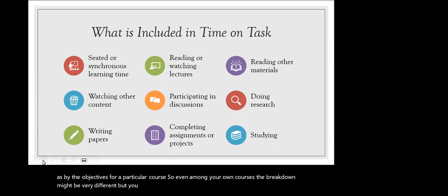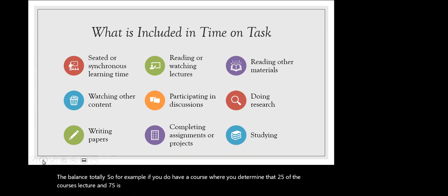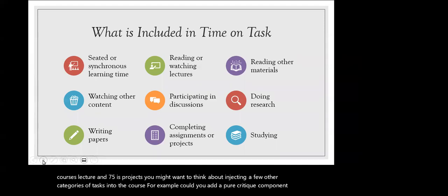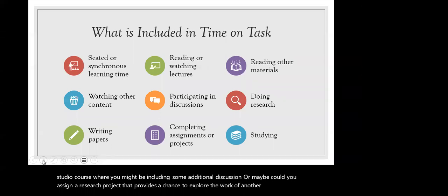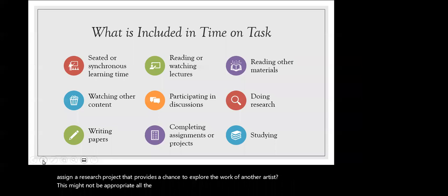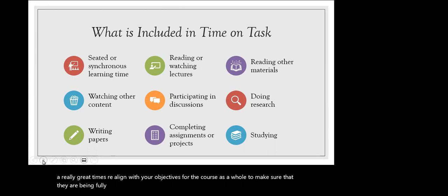The breakdown of task types should be driven by your discipline as well as by the objectives for a particular course — so even among your own courses the breakdown might be very different. But you don't want to ignore the balance totally. If you have a course where 25% is lecture and 75% is projects, you might want to think about injecting a few other categories of tasks. For example, could you add a peer critique component into a studio course to include some additional discussion? Or assign a research project that provides a chance to explore the work of another artist? As you figure out your time on task, it's a great time to realign with your objectives for the course.